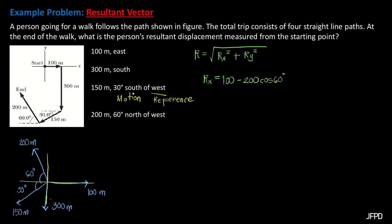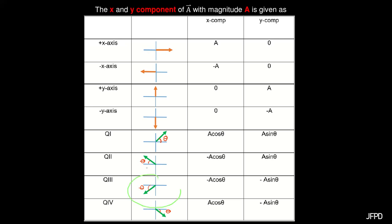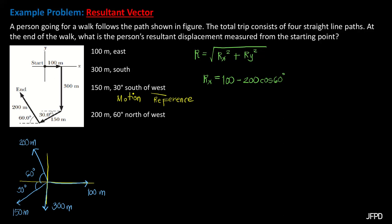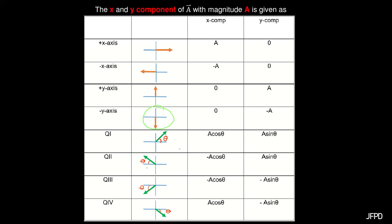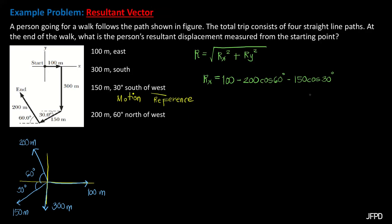For 150 meters in quadrant 3, the x-component is negative of the magnitude multiplied by cosine of theta below the negative x-axis — that is, negative 150 meters times cosine 30 degrees. For 300 meters on the negative y-axis, the x-component is always equal to zero.